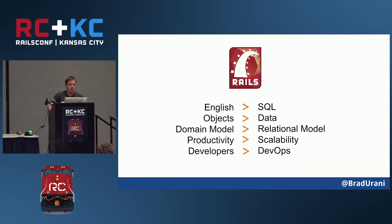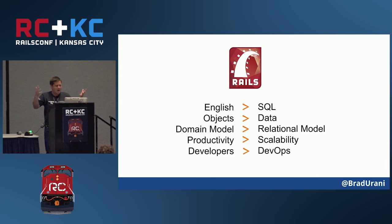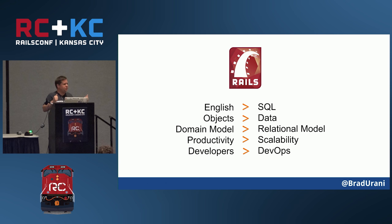To sum up the Rails Active Record philosophy: it favors English over SQL — we've extracted away the SQL, which is good for readability. We've got objects, not data — gorillas with bananas. Domain models over relational models, where classes represent real-world entities like party, user, conference. Rails is big on productivity — the 15-minute blog — it lets you develop really fast. But it's tough on scalability because it's so easy to do N+1s and forget the select. There are also a few other performance-related things I'll talk about later.